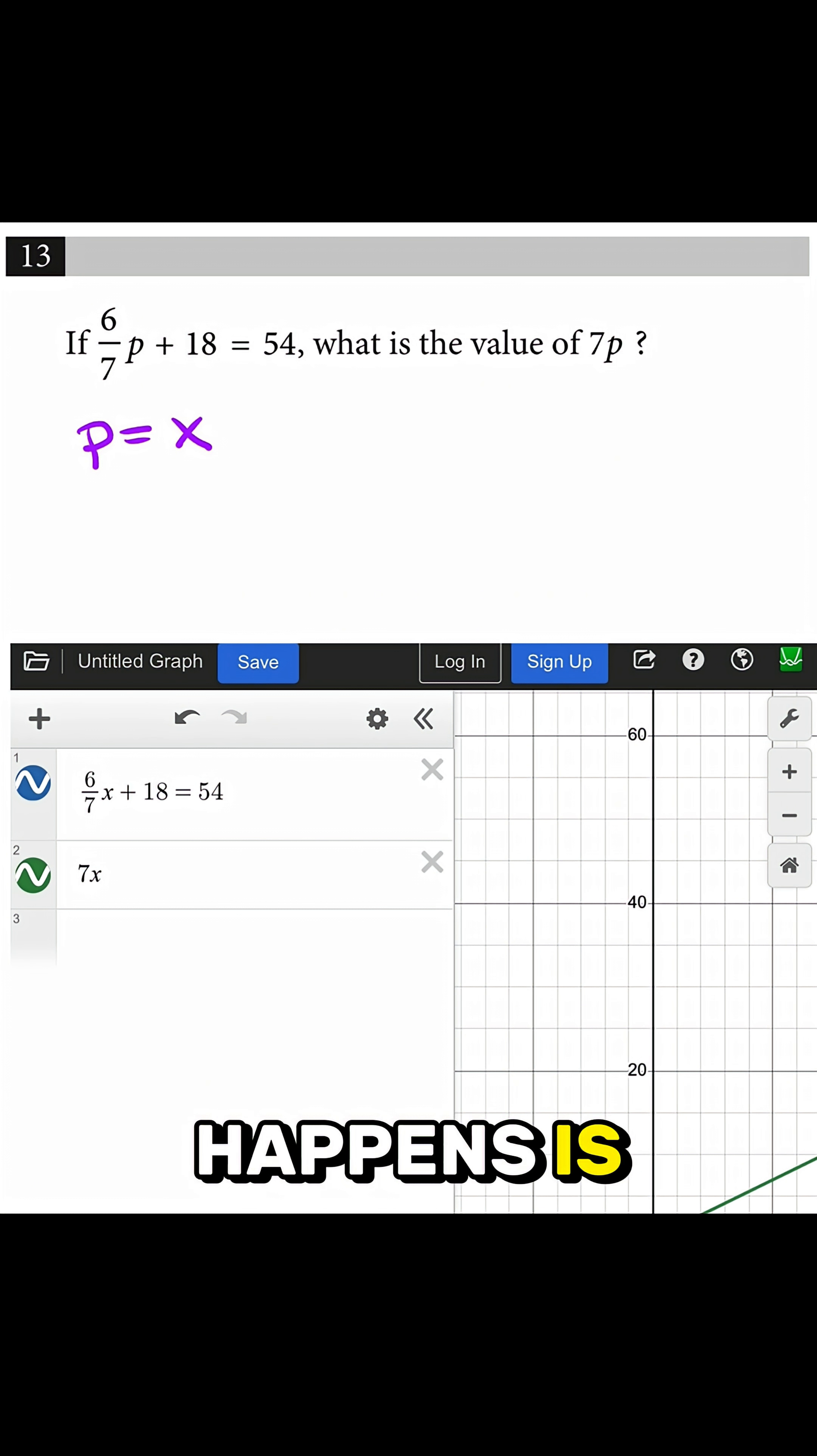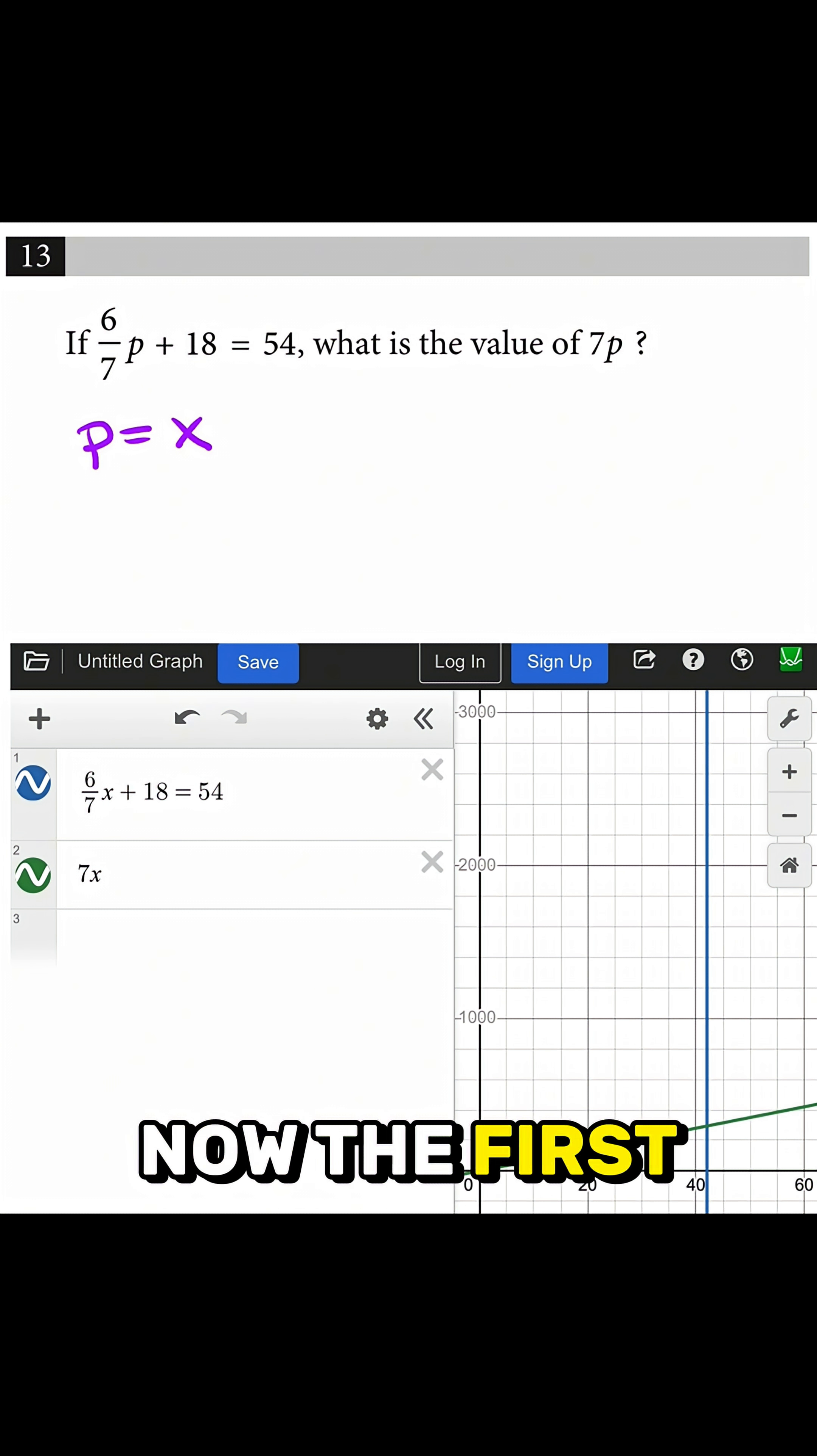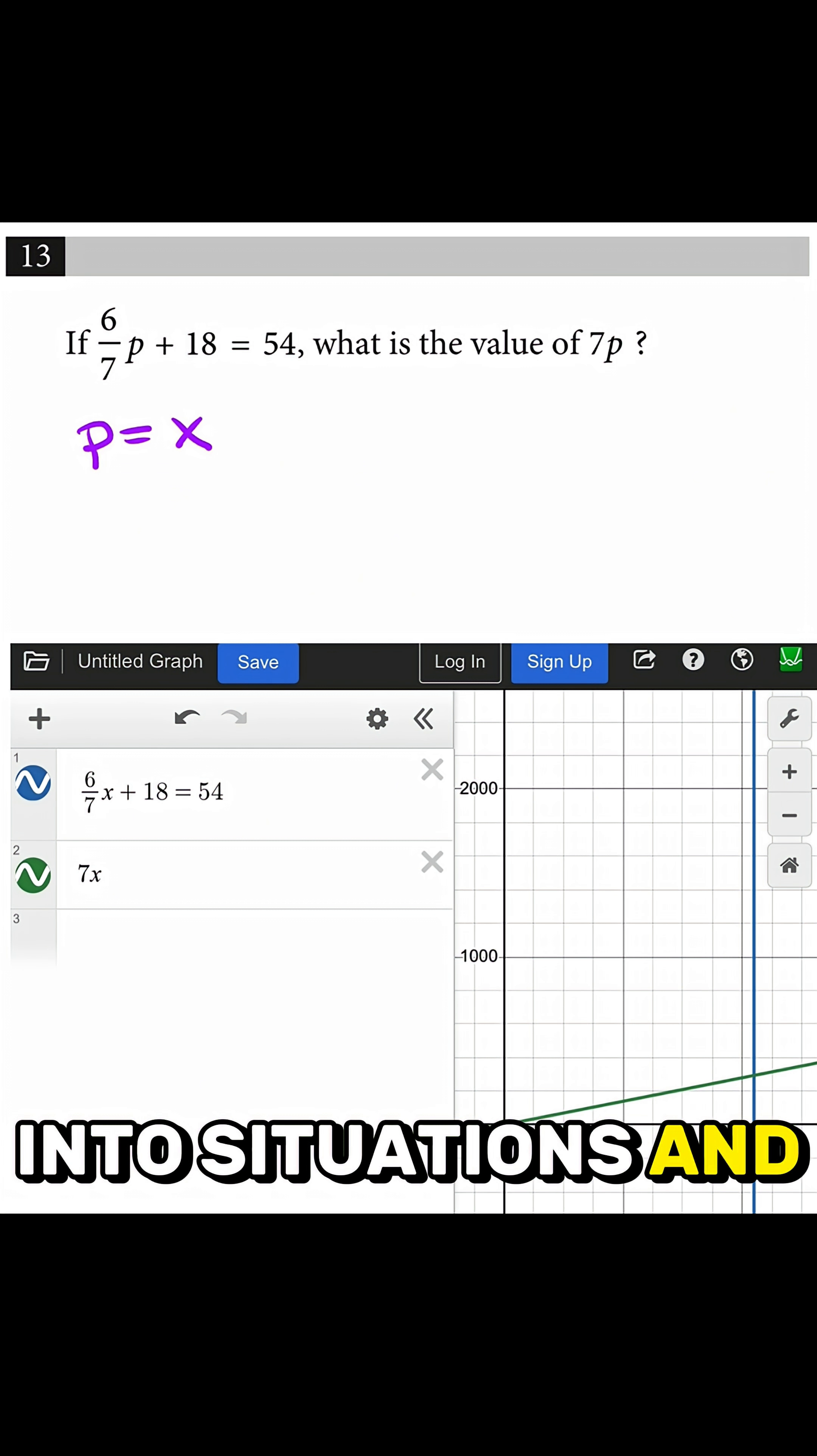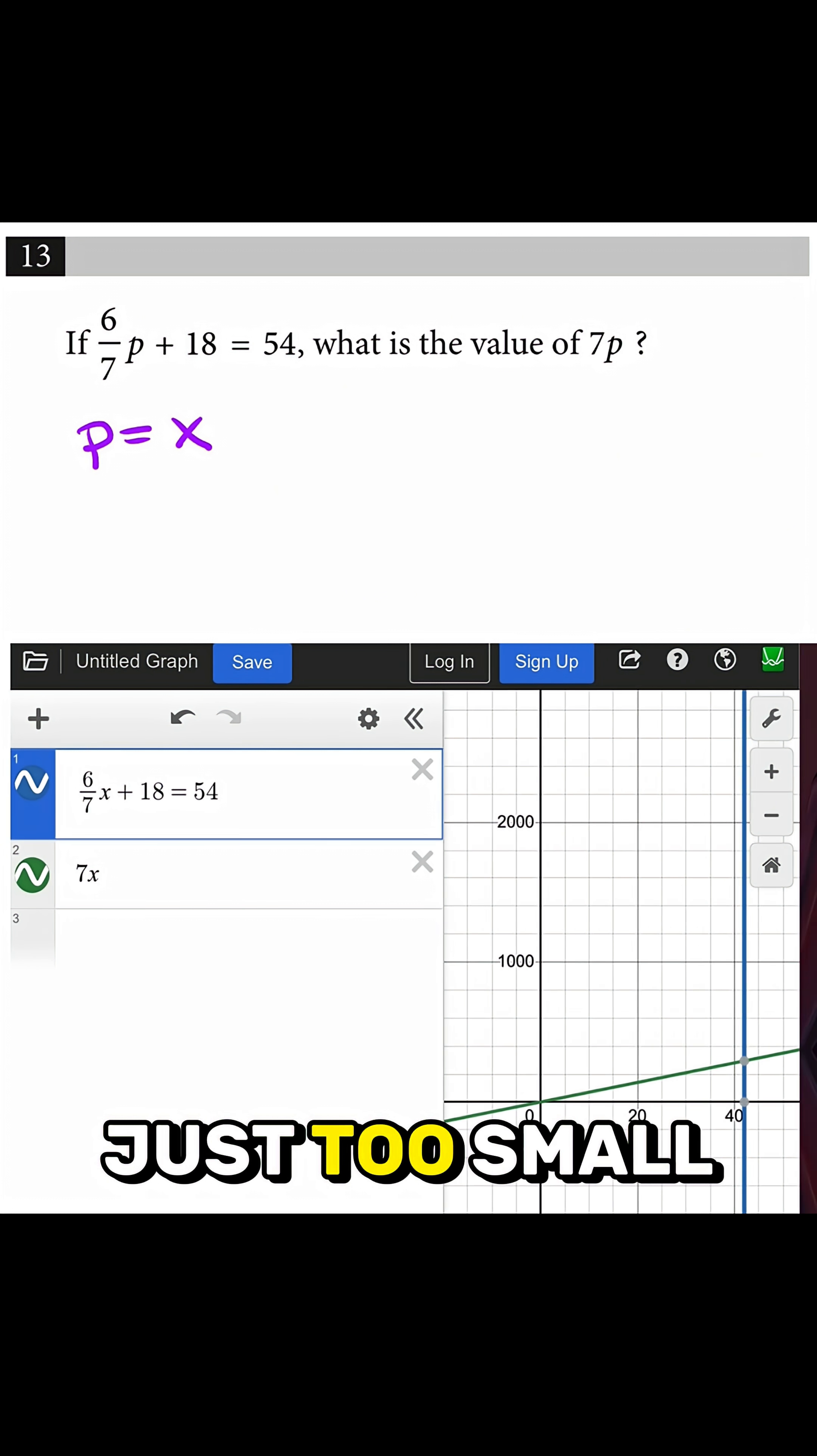And so what happens is I should see two lines that were plotted. Now the first line is going to be pretty far over, so make sure you zoom out. If you typed in two situations and you only see one line, zoom out a little bit because maybe your window is just too small.